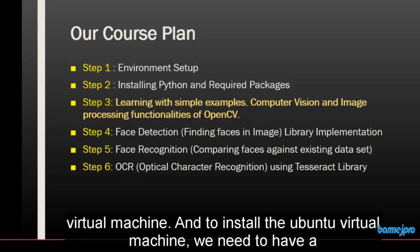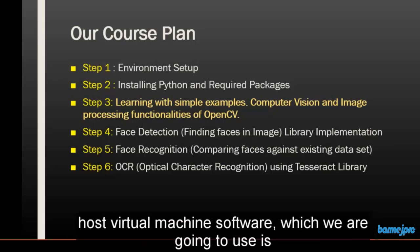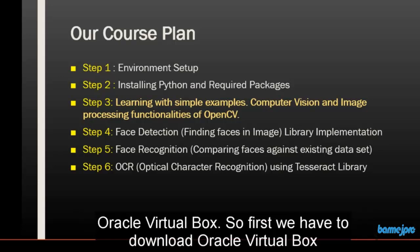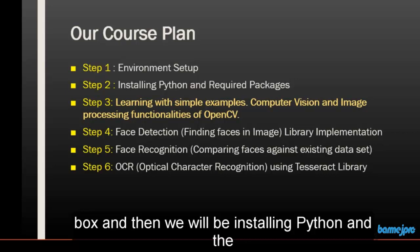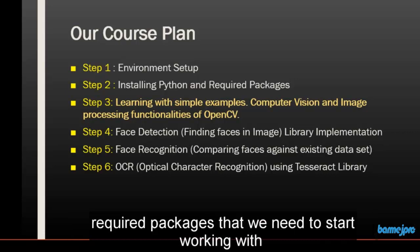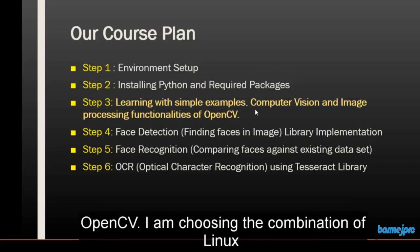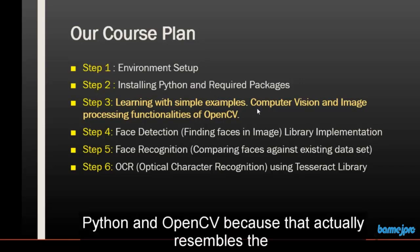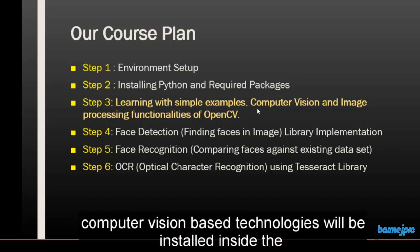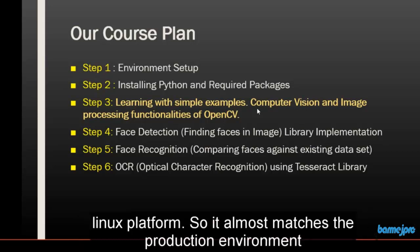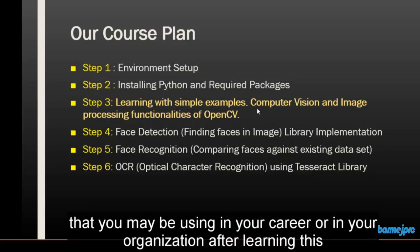To install the Ubuntu virtual machine, we need a host virtual machine software — we're going to use Oracle VirtualBox. So first we download Oracle VirtualBox, then install Ubuntu Linux inside it. Then we will install Python and the required packages needed to start working with OpenCV. I'm choosing the combination of Linux, Python and OpenCV because it resembles the production environment in most cases — computer vision-based technologies are typically installed inside a Linux platform — so it almost matches the production environment you may encounter in your career or organization.